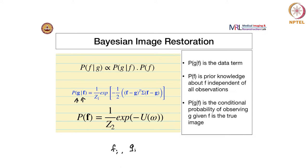We write down Bayes' rule for this estimation problem. We are trying to estimate the denoised image F — the true ideal image — given the noisy observation G. The posterior probability P(F|G) is proportional to the likelihood P(G|F) times the prior P(F). P(G|F) is called the data term.